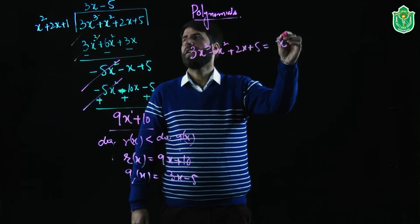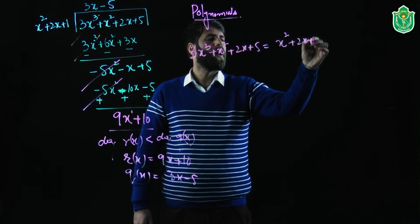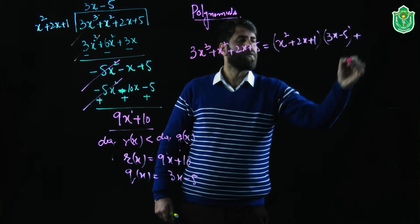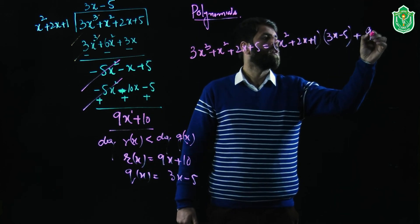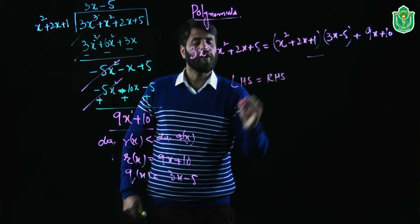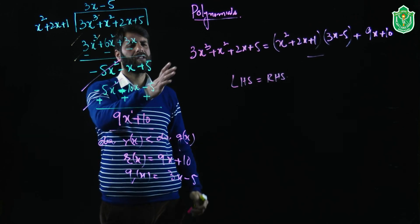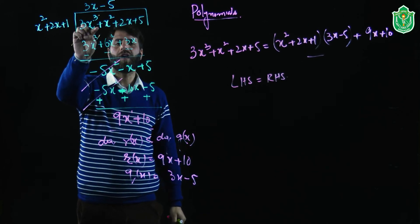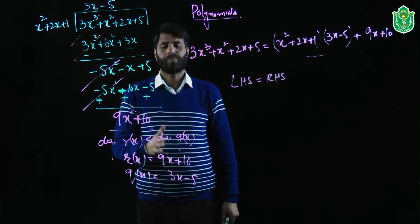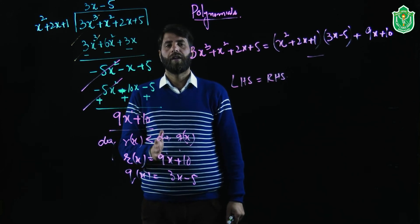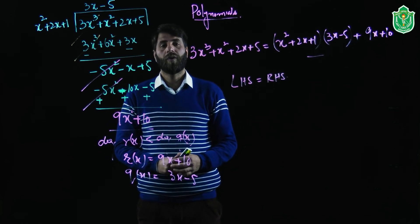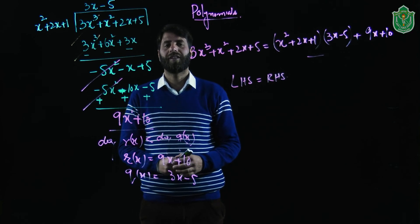On multiplication you can check that LHS equals RHS. This is all about the division of polynomials by the division algorithm for polynomials. The polynomial p of x is equal to g of x into q of x plus r of x. Hope you have enjoyed the lecture on the division algorithm for polynomials. We can take further examples in the next session. Till then, bye bye.